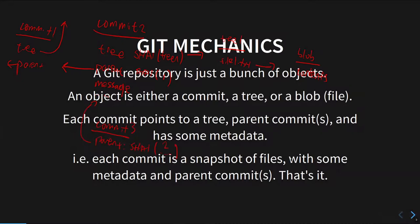Does this seem familiar? It's similar to a blockchain. Git was created around 2004-2005, before blockchain was popular, so git actually came first. If you're using git, you're literally using a blockchain — each block refers to its parent block by hash, and refers to its contents by hash, just like a Merkle tree.